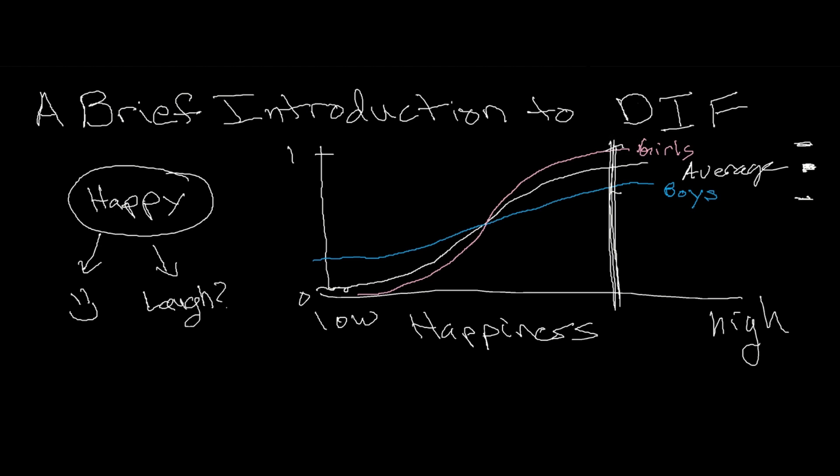And what's really interesting is DIF actually only occurs if we have enough information to look at the whole spectrum of happiness. Because if our sample only had access to a very limited range, say like right in here, we might not be able to tell that DIF is occurring. So having a wide enough sample to be able to make these distinctions about differences between groups, between individuals, is the cornerstone of DIF.